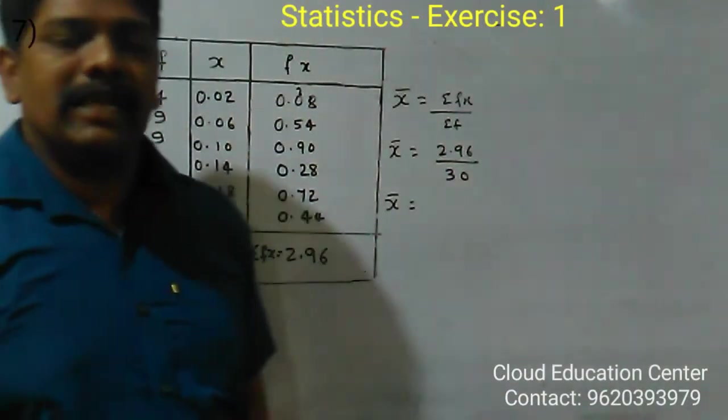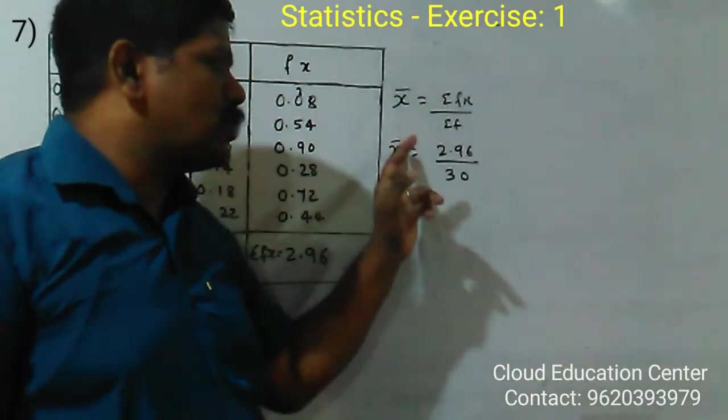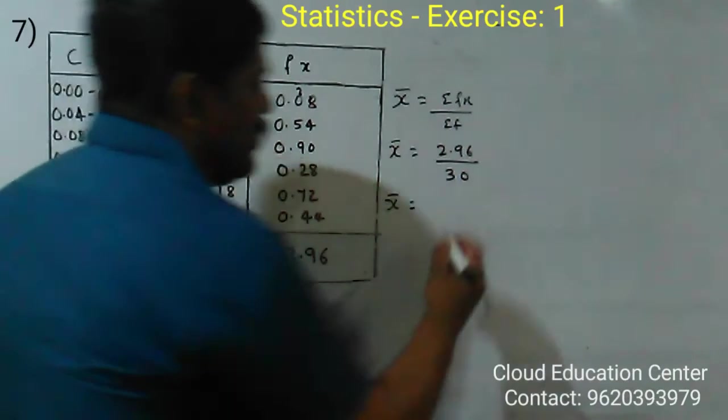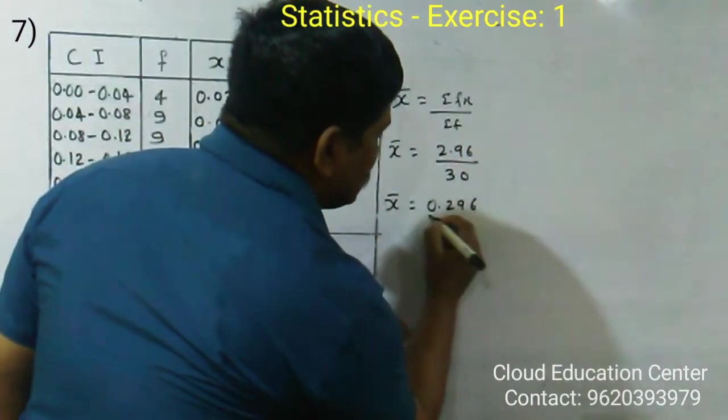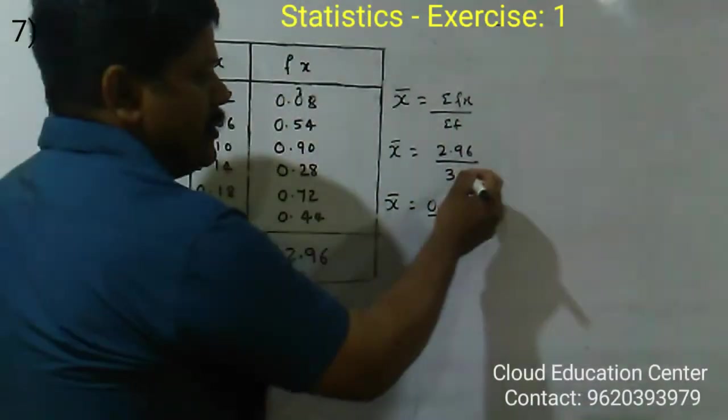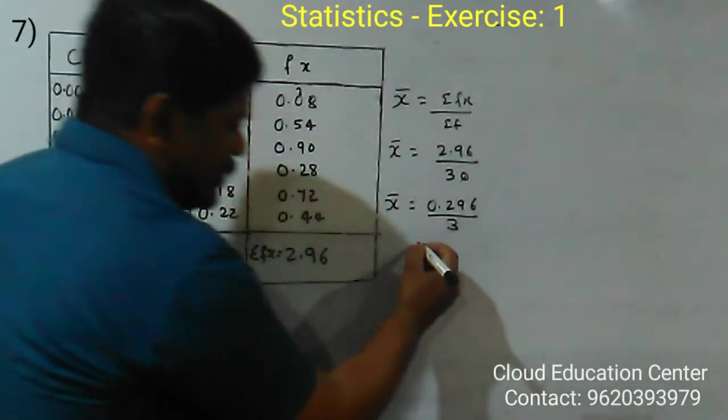30 equals 3 times 10. When dividing by 10, the decimal point moves to the left, so it becomes 0.296 divided by 3. The zero gets cancelled. Now divide this.